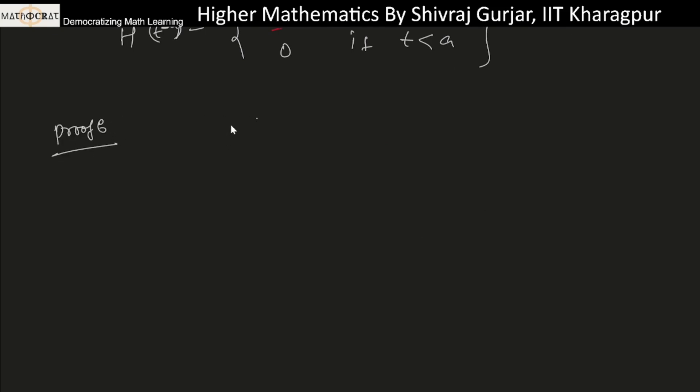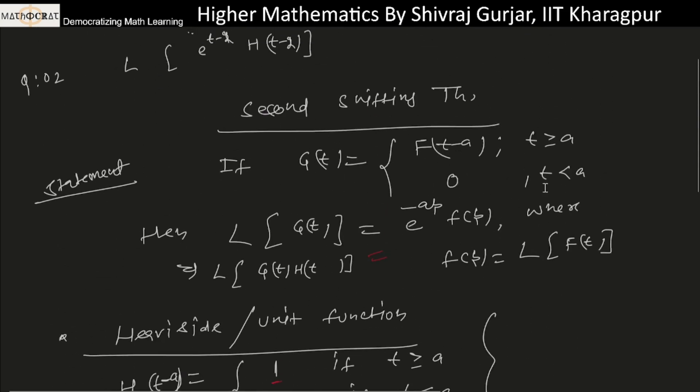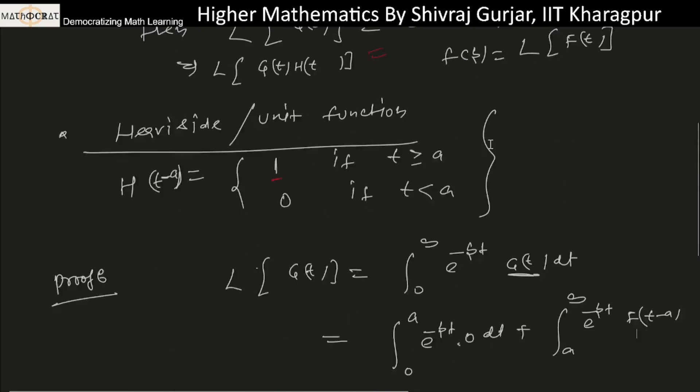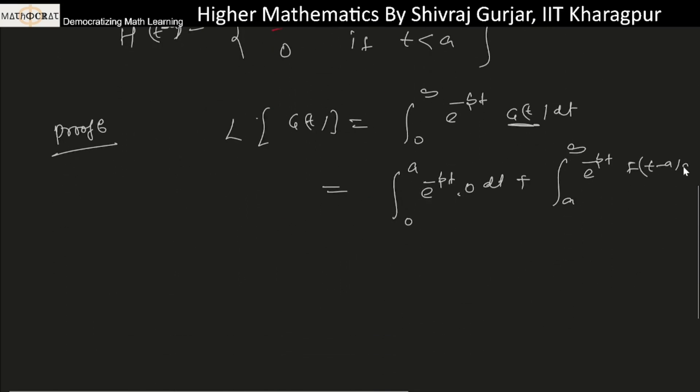Now let's find the Laplace of g(t). This will be the integral from 0 to infinity of e^(-pt) g(t) dt. This is the definition of Laplace. From 0 to a, when t is less than a, then g(t) is 0, so this part is 0. From a to infinity, we have e^(-pt) times g(t), which is defined as f(t-a) dt.